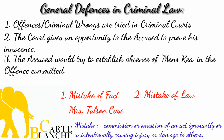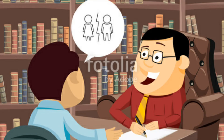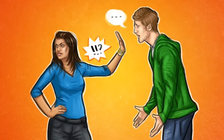Let us consider the second case, known as Wheat's case. In this case, the accused was illiterate. He was informed in good faith that he had been granted a divorce from his first wife. Believing so, he got remarried. But unfortunately, his first wife charged him with bigamy. The court held him guilty of bigamy and convicted him on the ground of the law. In this case, we can confirm that ignorance of law is no excuse.